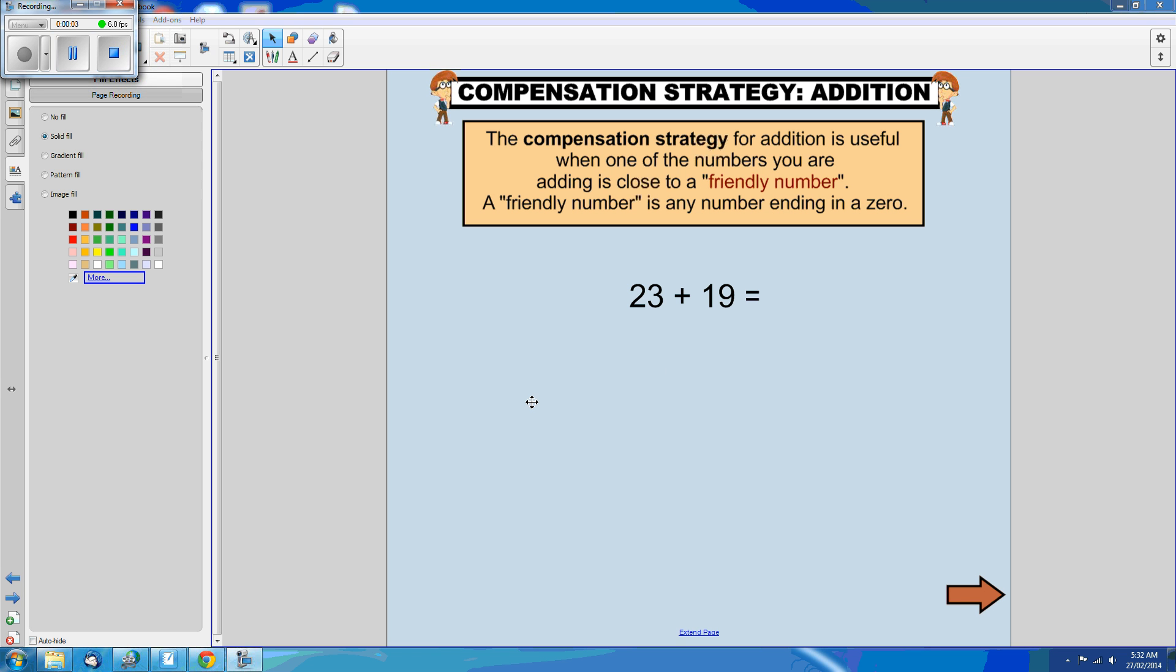Let's see how we can do 23 plus 19 using the compensation strategy and a number line to demonstrate. 19 is very close to a friendly number, isn't it?